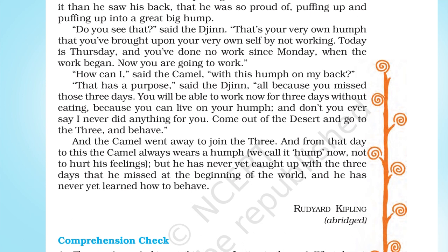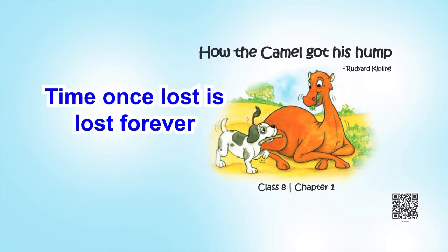The third and most important part of the entire text is where you get to see the reason for the camel's hump. I'd like you to read the last three lines of the text: 'But he has never yet caught up with the three days that he missed at the beginning of the world.' And when this happens, you get to remember that time once lost is lost forever. This is the proverb being professed in this particular line. You have to remember that once you lose time, it can never be made up or replaced by anything else. Time is that precious.